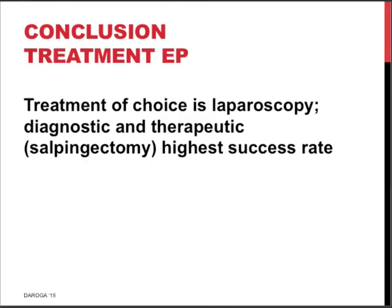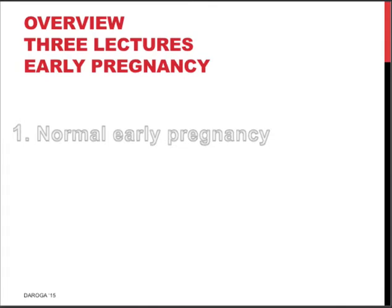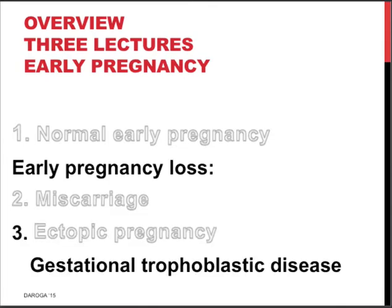The treatment of choice is laparoscopy and laparoscopic salpingectomy — removal of the diseased fallopian tube — because that has the highest success rate. The second option is methotrexate intramuscular, if there is a small non-bleeding ectopic pregnancy and follow-up compliance of the woman is almost certain. This concludes the section on ectopic pregnancy.